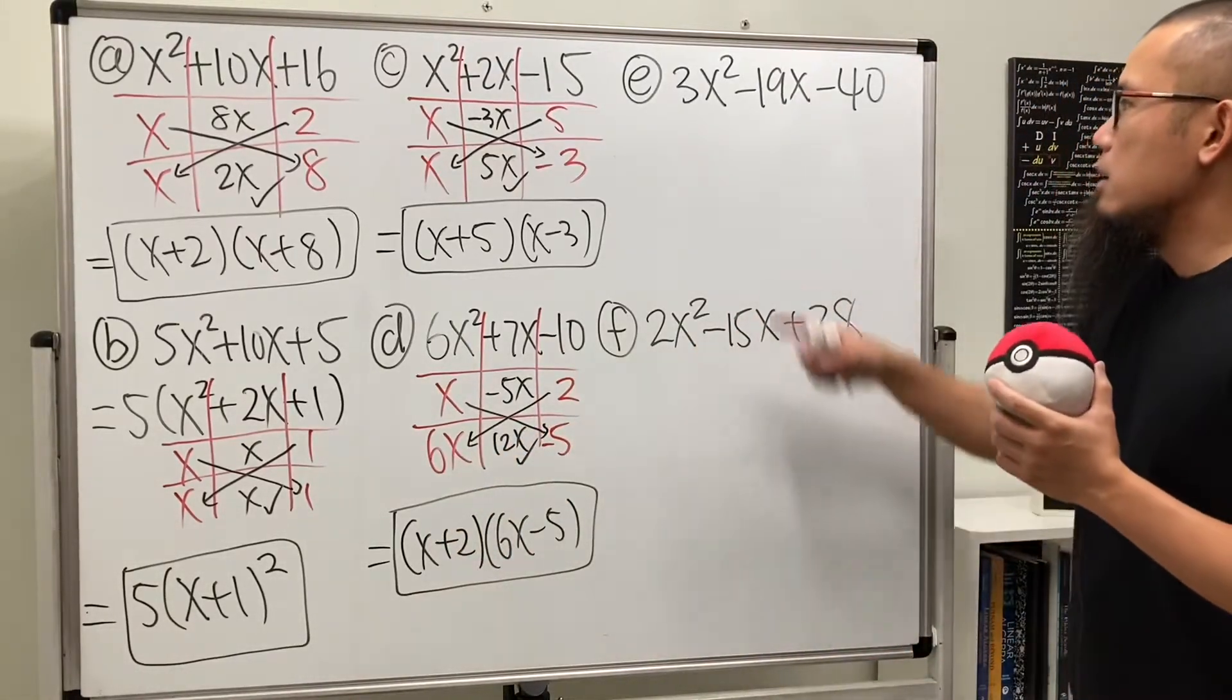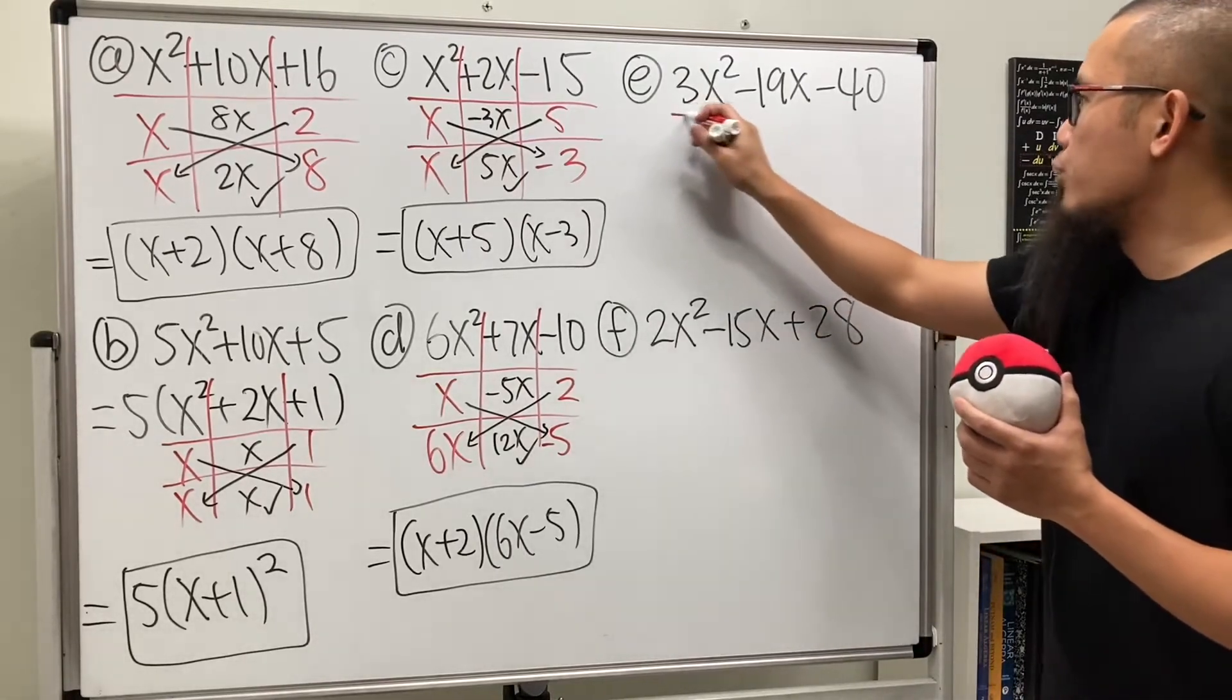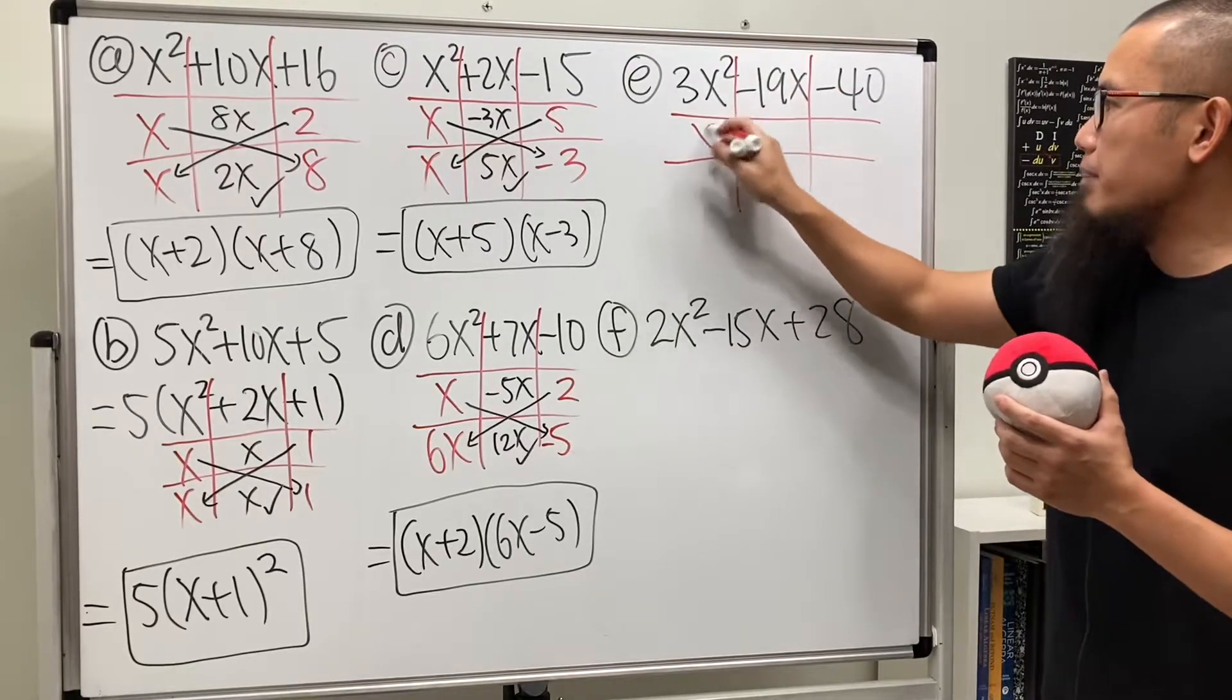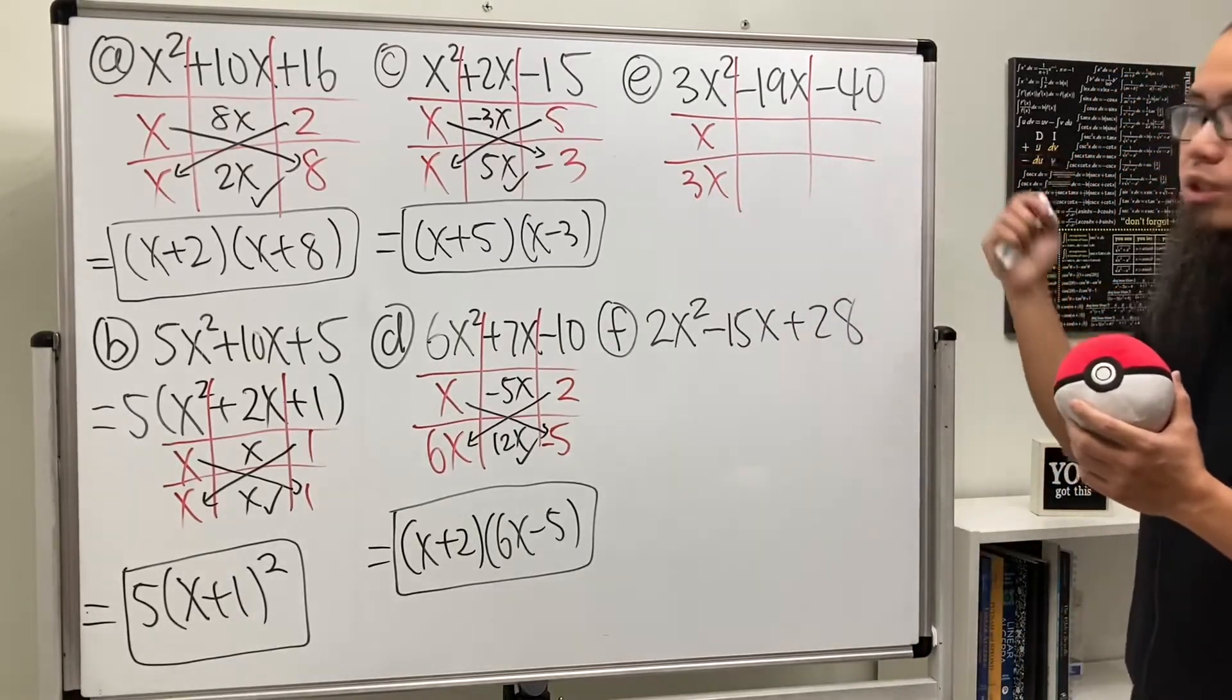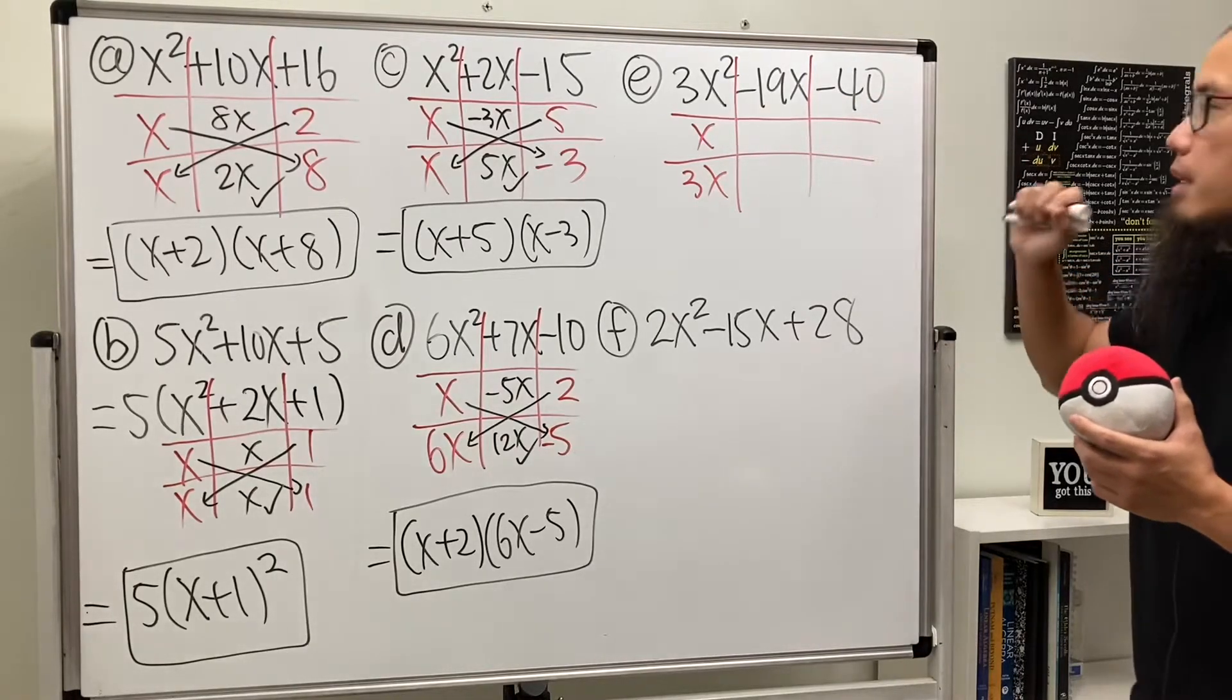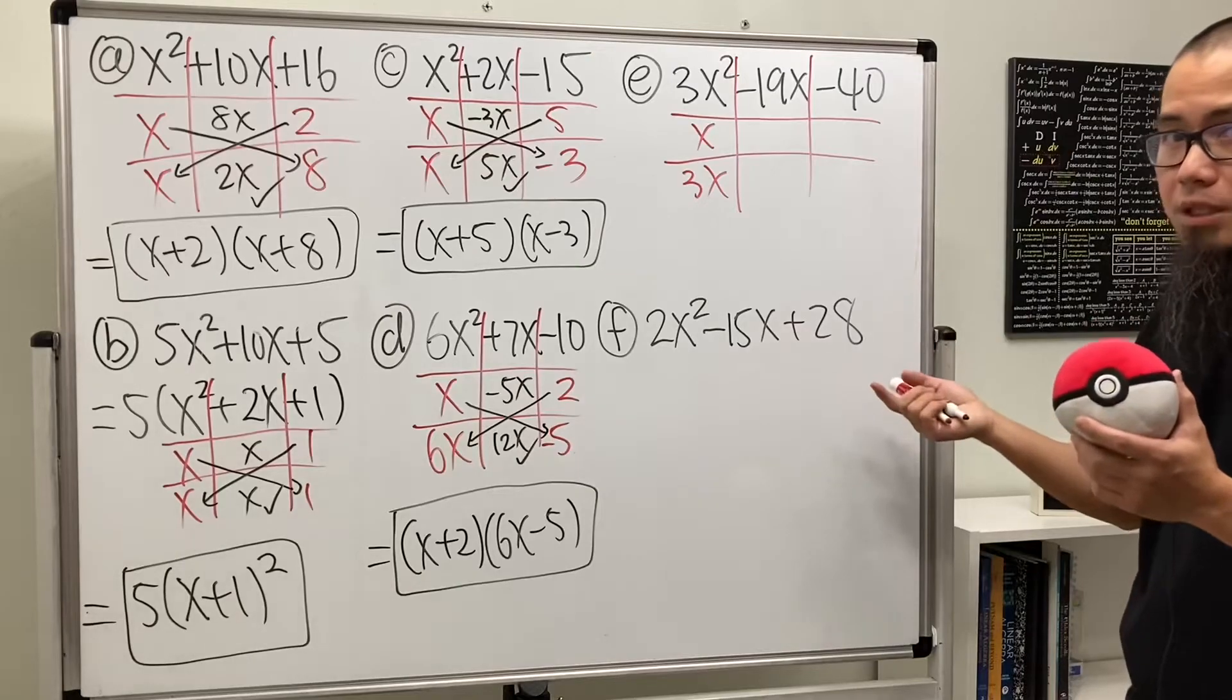Now let's look at this one. Unfortunately we cannot factor our common number. So let's just go ahead and proceed with the tic-tac-toe. This right here is not bad, x times 3x. Well, you can write it as 3x times x. It doesn't really matter. Now this is the part that really matters the most. What times what will give us negative 40? And let's see, maybe use 5 and 8. And one of them should be negative.